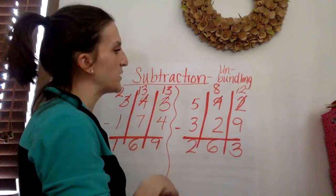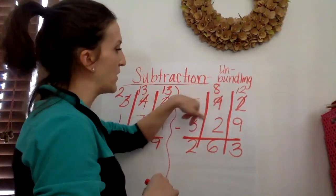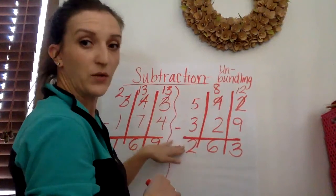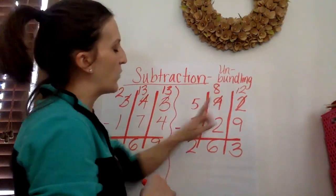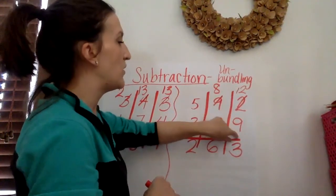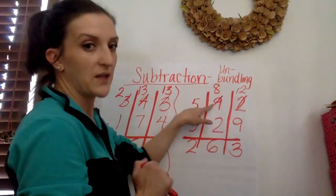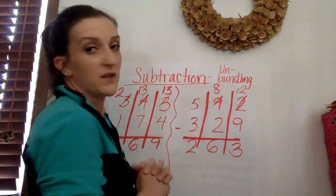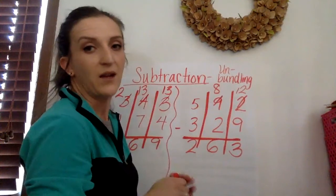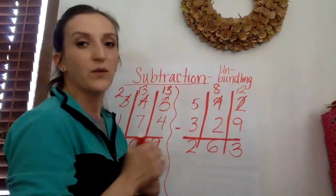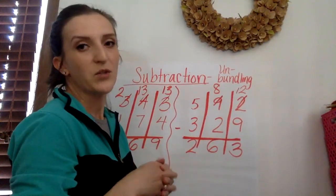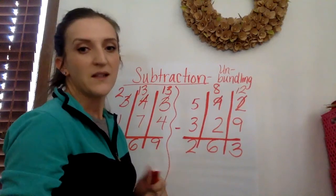So again, to review when you're subtracting. If you have more on top, there's no need to stop. You can subtract straight down. But if there's more on the floor, you need to go next door and get 10 more. If the numbers are the same, zero is the game. I hope this helped reviewing your addition and subtraction strategies. Thanks guys. Bye.